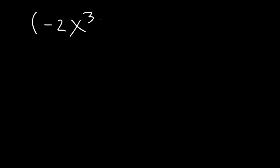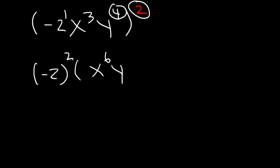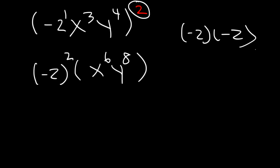Try this one: negative 2x cubed y to the 4th, raised to the 2nd power. The negative 2 is to the 1st power, and multiplying by 2 gives negative 2 to the 2nd power. Then 3 times 2 is 6, giving x to the 6th, and 4 times 2 is 8, giving y to the 8th. Negative 2 squared is negative 2 times negative 2, which equals positive 4. So the answer is 4x to the 6th, y to the 8th.